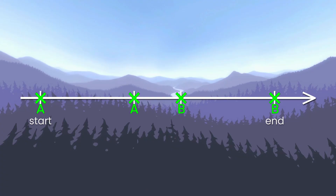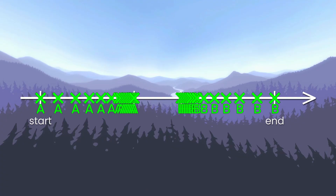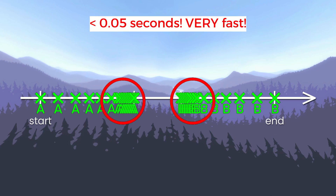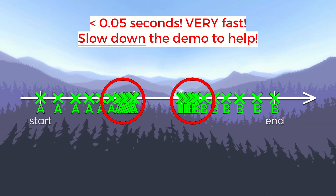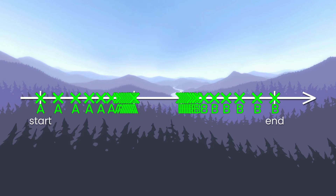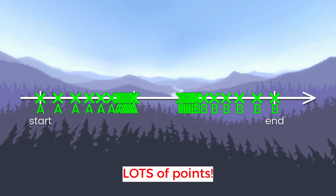Basically, to get what we want, we have to spam points like this. It's critical that the spaces between these points are very small — probably within 0.05 seconds of each other. So you'll need to slow down the speed of the demo so you can have enough time to spam the points. How many points do you need? Just spam it and you'll have more than enough — I often end up with around 20 points clustered together.